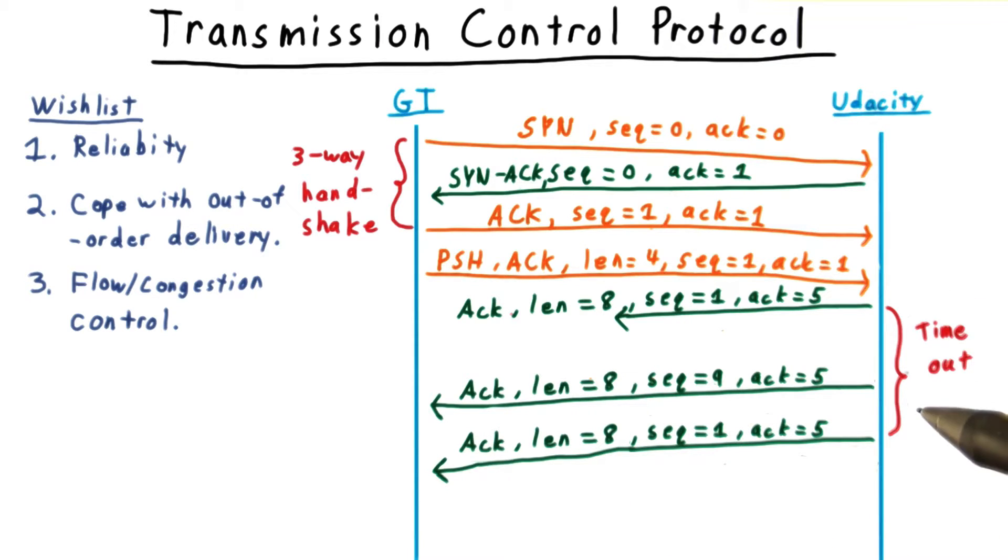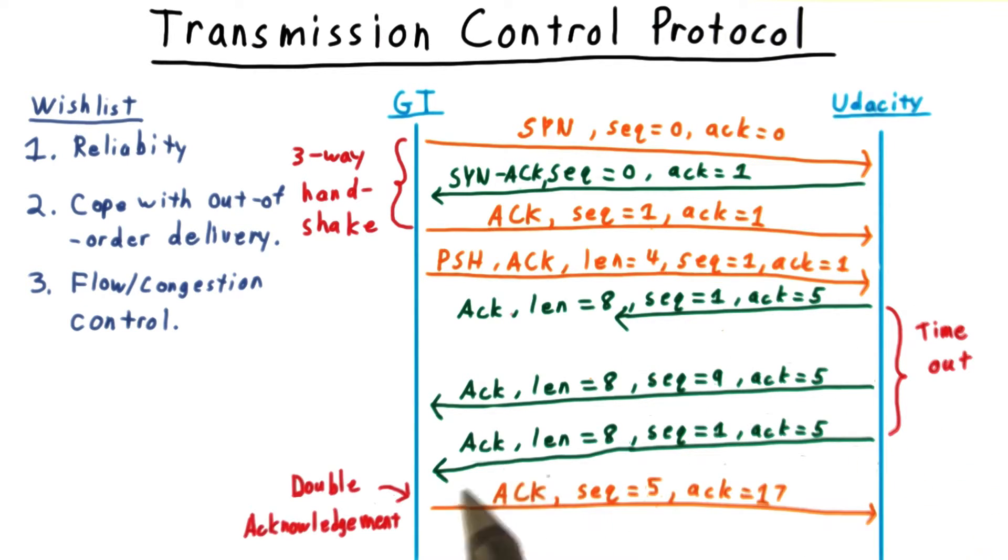After enough time has passed, Udacity will notice that it hasn't received an acknowledgement for that first packet, and will retransmit it. When GT receives the retransmitted package, he can now send an acknowledgement for both packets, saying that he has received 17 bytes worth of data.